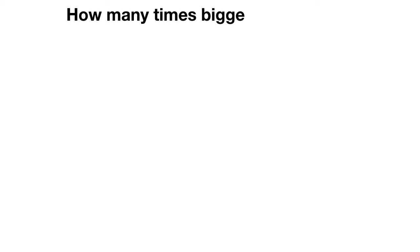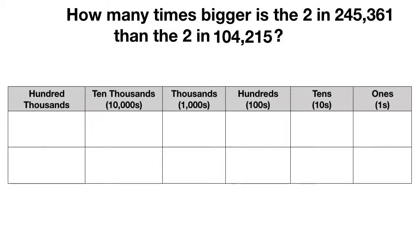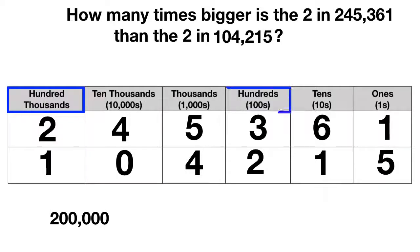Let's do one of these together. How many times bigger is the 2 in 245,361 than the 2 in 104,215? On a place value chart, let's put our first number on top and our second number on the bottom. In the first number, our 2 is in the 100,000s place, with a value of 200,000. In our second number, the 2 is in the 100s place, with a value of 200.